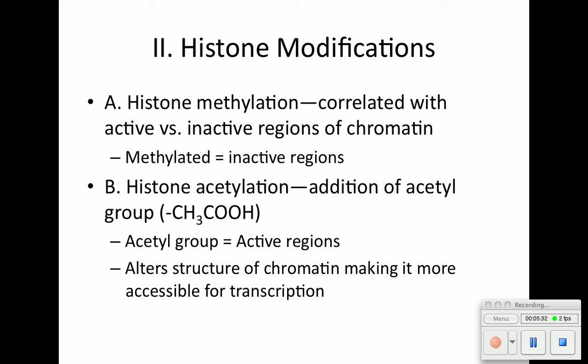How histones can help turn genes on is through histone acetylation, which means we're going to add an acetyl group. Acetyl groups are associated with active regions. How it helps make the chromatin and DNA active or inactive is by unfolding or uncondensing the DNA.